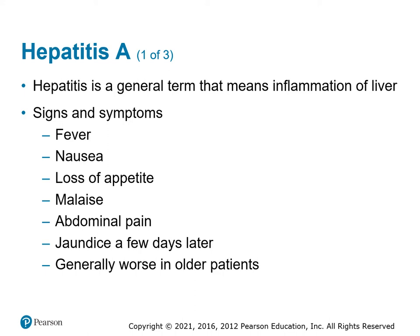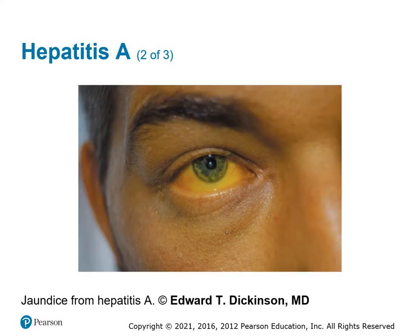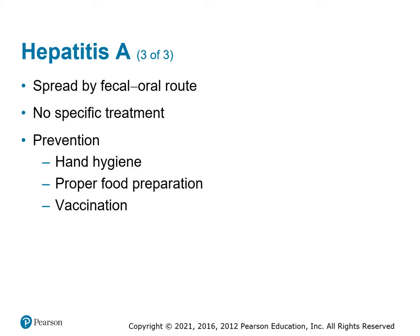Hepatitis A is one of several types of hepatitis and starts suddenly in adults. Hepatitis is a general term meaning inflammation of the liver — 'hepa' meaning liver, 'itis' meaning inflammation. Signs and symptoms include fever, nausea, lack of appetite, malaise, abdominal pain, and jaundice. Jaundice is key with any inflammation of the liver and is generally worse in older patients. Regardless of race, culture, ethnicity, or skin tone, the sclera will appear yellow or jaundiced with liver disease. Hepatitis A is spread by the fecal-to-oral route. There is no specific treatment. Prevention is hand hygiene, proper food preparation, and vaccinations. It commonly spreads among parents with children in diapers, and easily in crowded settings like daycares and schools.